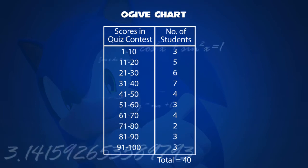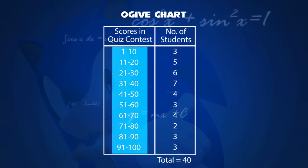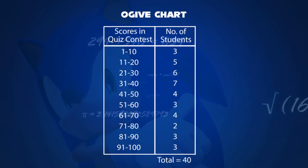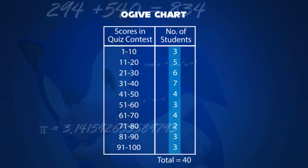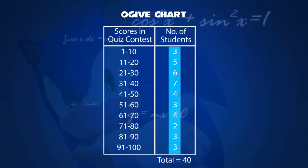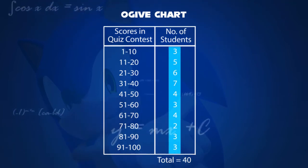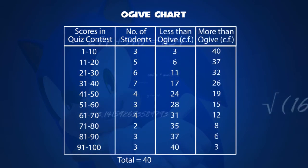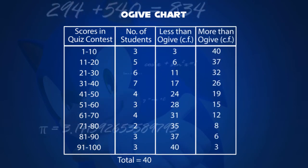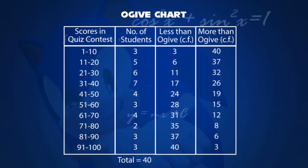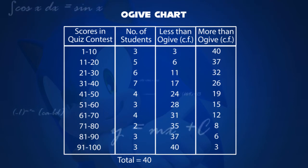The first column includes scores in a quiz contest depending on how many answers were marked correctly. The second column includes a total of 40 students in a class, termed as frequency. And the last two columns include more than and less than ogive curves in a cumulative frequency.